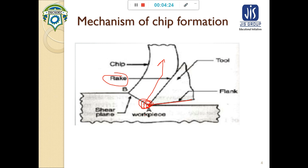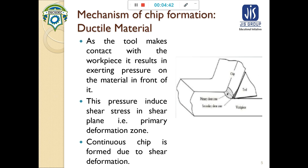The nature of shear deformation is different for ductile and brittle materials. In the case of ductile material, when compression is applied, shear stress is generated. Due to continuous generation of shear stress, a crack may form and propagates slowly through the workpiece, resulting in a continuous chip. The chip is formed from the primary deformation zone.